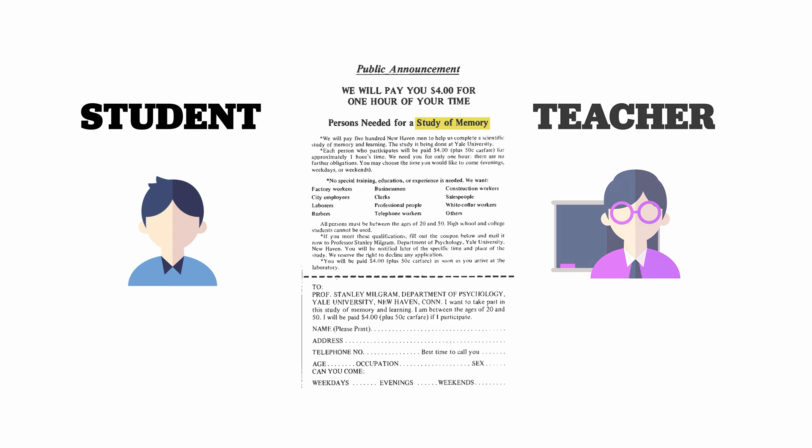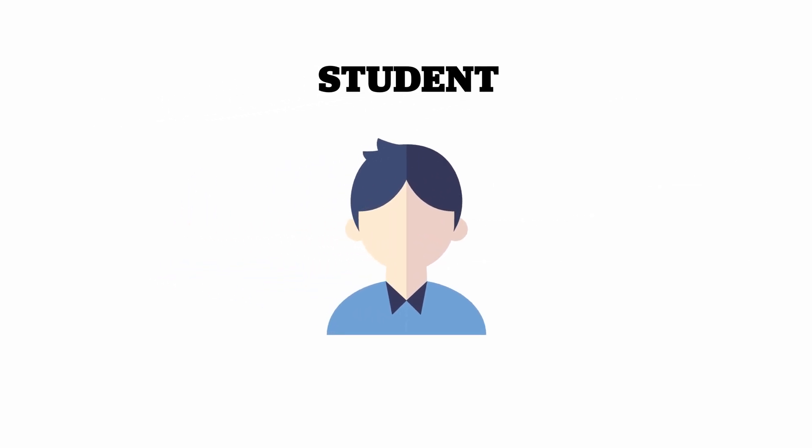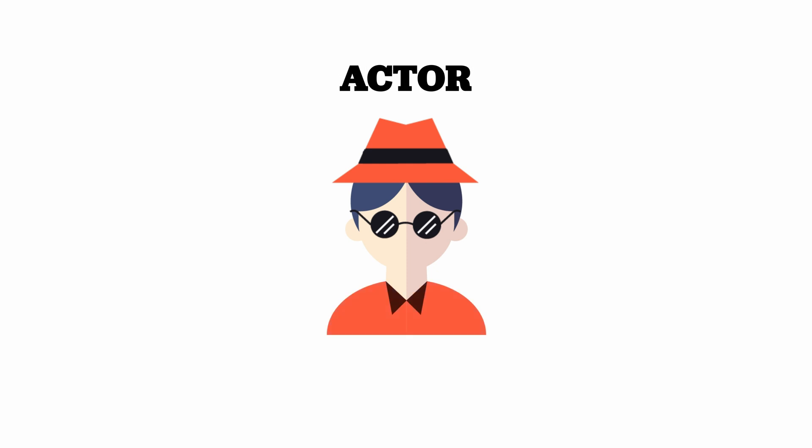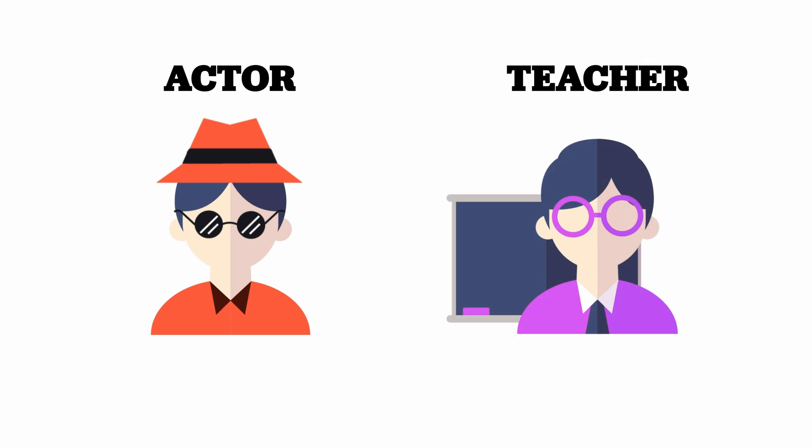The reality was that there were no students, at least not among the study subjects. Milgram had hired paid actors to take on the role of students. All study participants would be assigned the role of teacher and paired with an actor student. During the experiment, each participant would watch as the actor student was strapped to a chair and had electrodes attached to them by laboratory assistants.